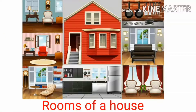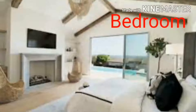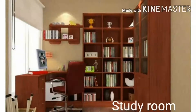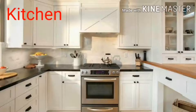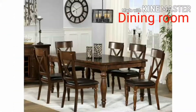Children, now let's see the different kinds of rooms in a house. A house has many rooms in it. Some of these rooms are: living room or drawing room, bedroom, study room, kitchen, bathroom, and dining room.